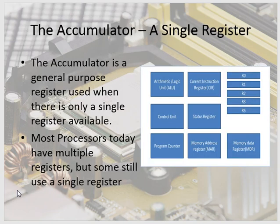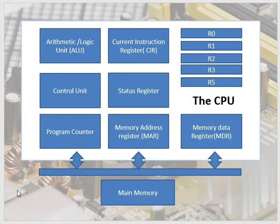The accumulator is a general purpose register used when there is only a single register available. Most processors today have multiple registers, but some still use a single register. There we have a schematic of the CPU with its different registers and components. It's worth memorizing these components, how they work with each other, and the role they play within the CPU.